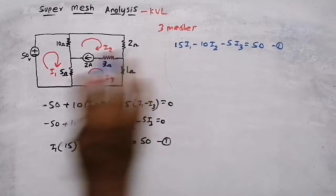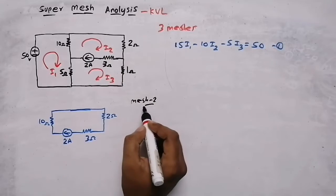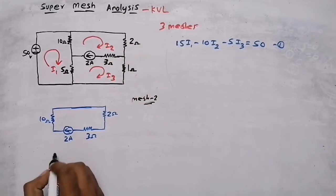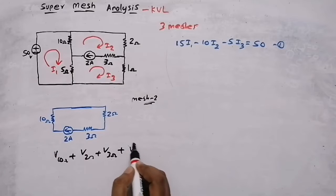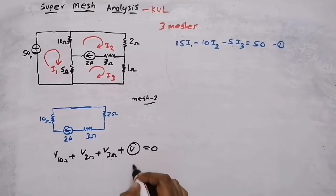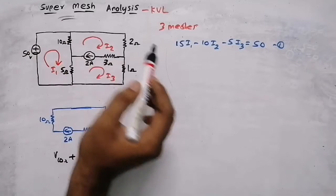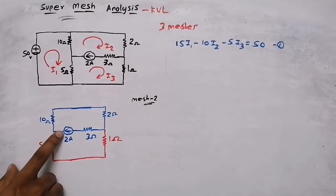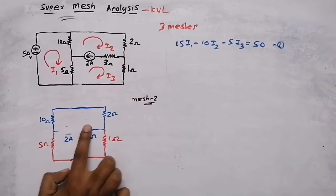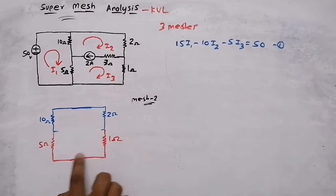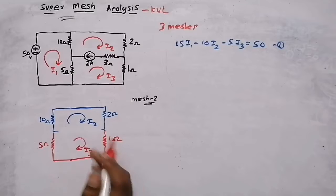Now writing the mesh equation for mesh two. Applying KVL, we need the voltage across the 10-ohm, 2-ohm, and 3-ohm resistors. However, there is a current source in between two meshes and we don't know the voltage across it, so we cannot write the mesh equation directly. When a current source is shared between two meshes, we call it a super mesh. In a super mesh, we eliminate that current source branch and write the combined mesh equation.